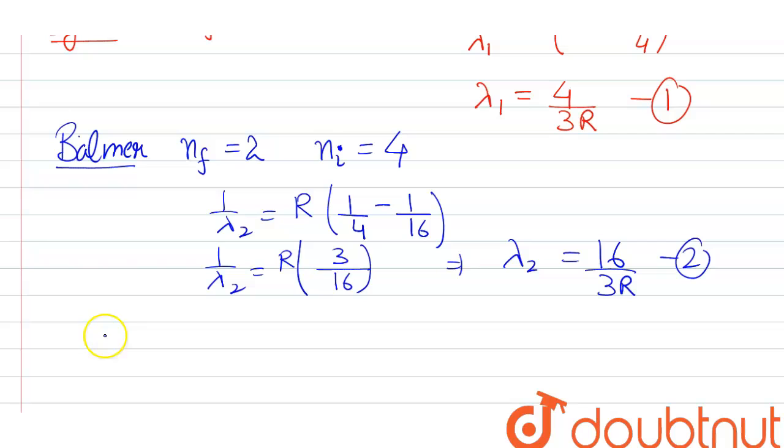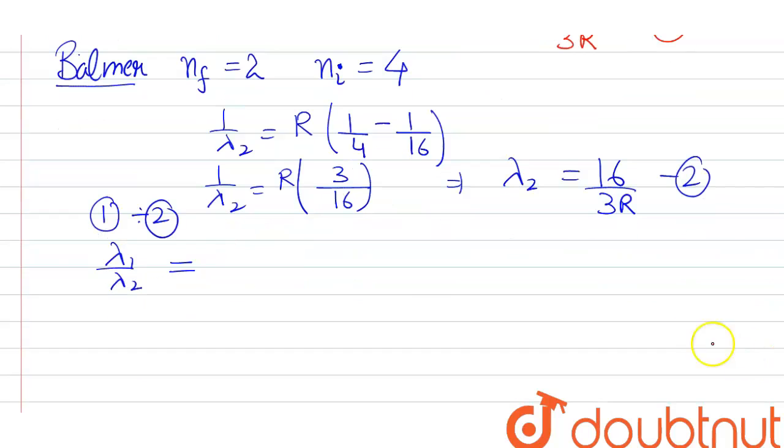Now we have to find the ratio λ₁/λ₂. So on dividing first by second, we get λ₁/λ₂ will be equal to 4/3R multiplying 3R/16.